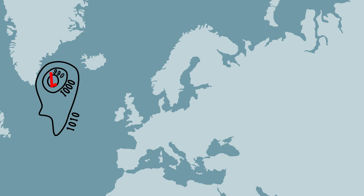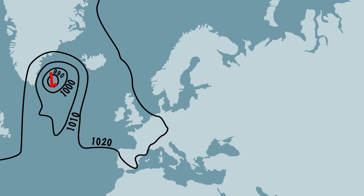Let's also draw the isobars with an air pressure of 1020 and finally also the isobars with an air pressure of 1030 millibars. This shows a small area above Ireland where the air pressure exceeds 1030, so this is an area with high air pressure — a high pressure area.